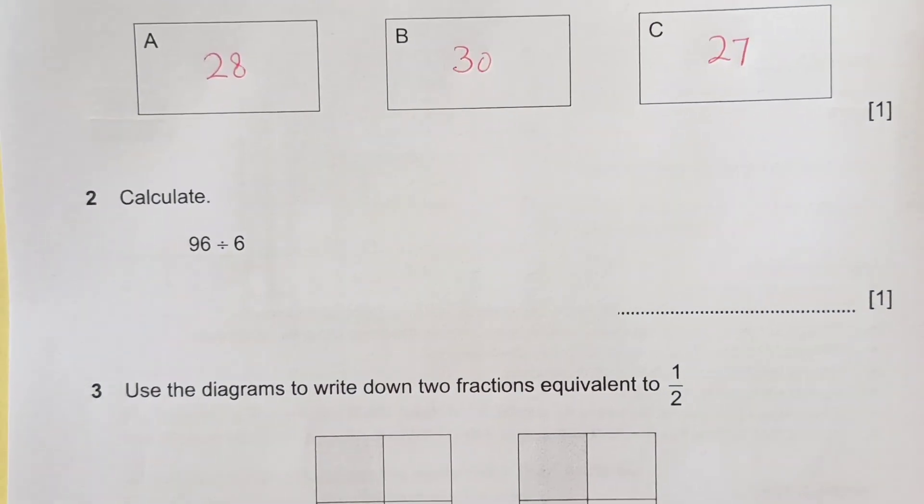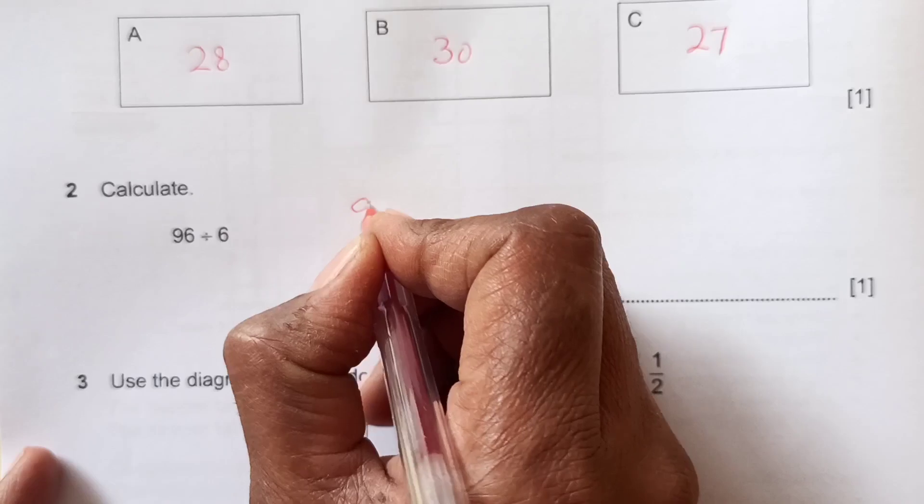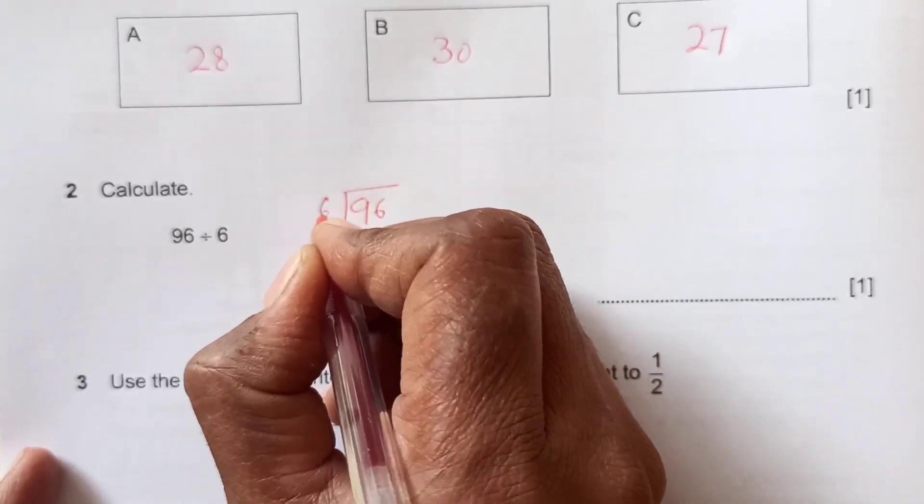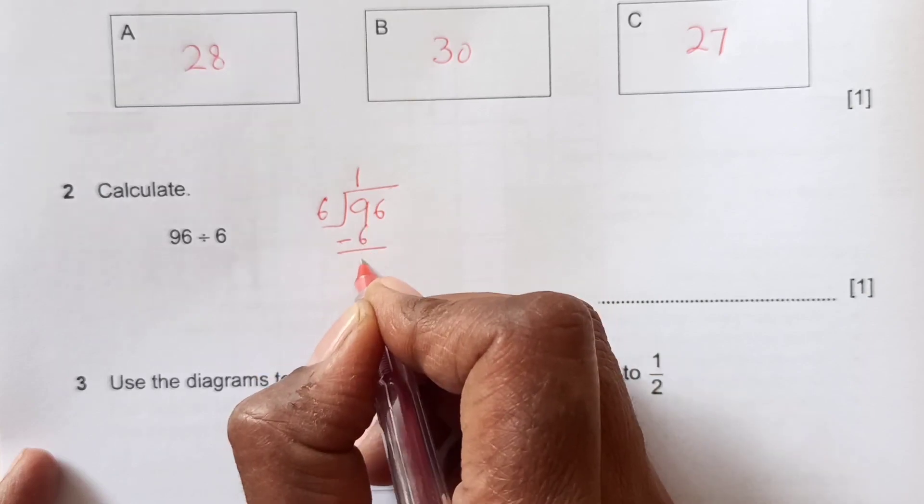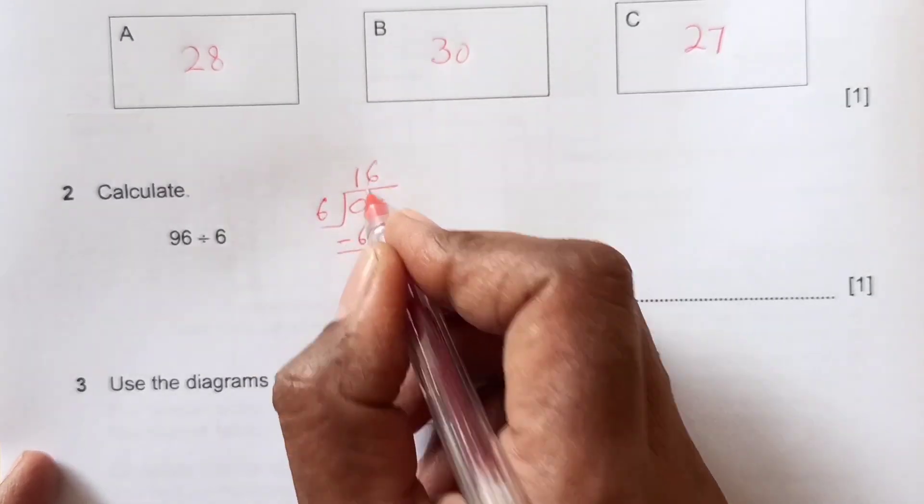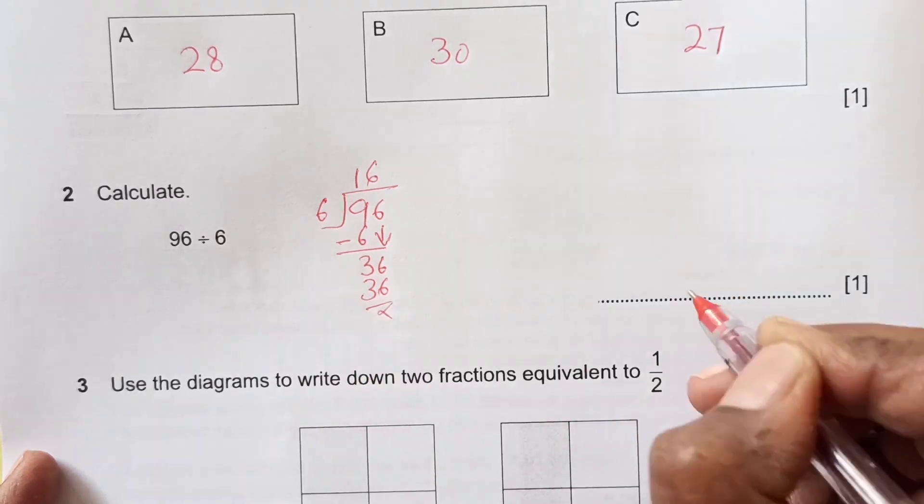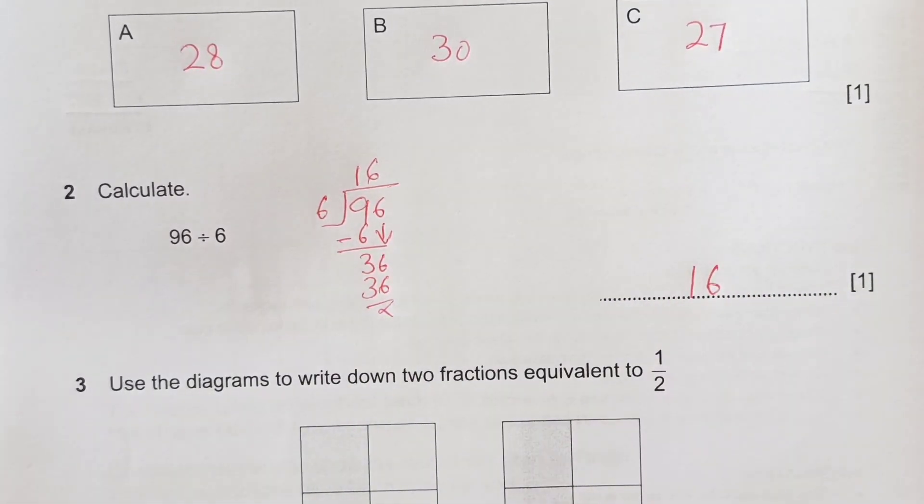Now, calculate 96 divided by 6. We need to divide 96 by 6. 6 times 1 is 6, subtract 9 minus 6 is 3. Drop down 6. 6 times 6 is 36. So 16 is the final answer.